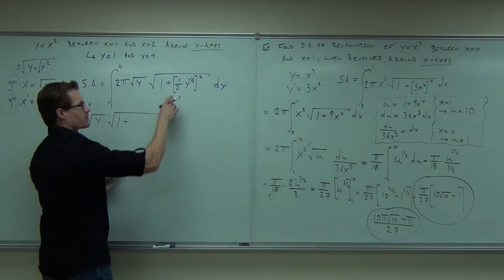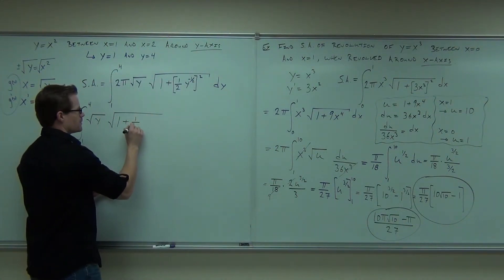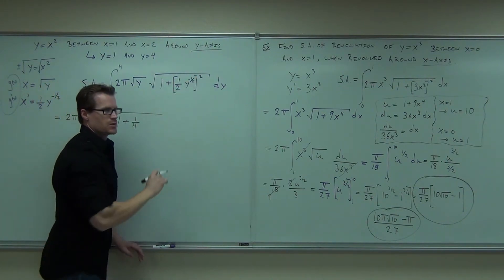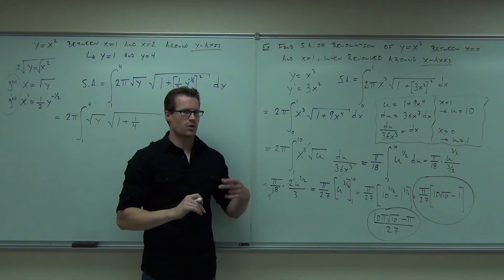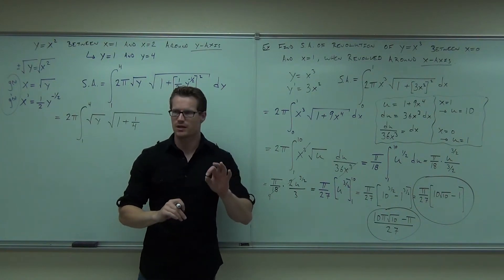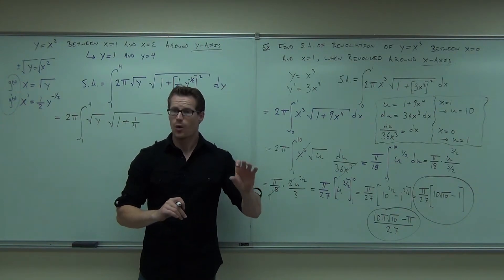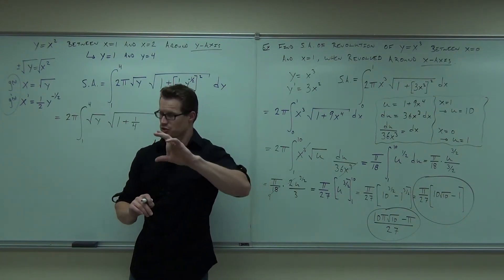Be very careful. The one-fourth, very good. The y, negative one-half times two, not adding, times. Negative one-half times two is negative one. So you're not going to get one-fourth y. You're going to get one over four y. Do you see it? Or you can do y to the negative one over four, but you're going to change that.